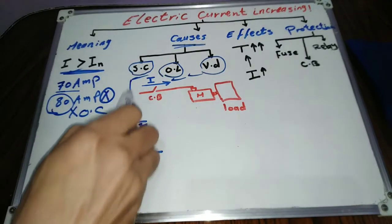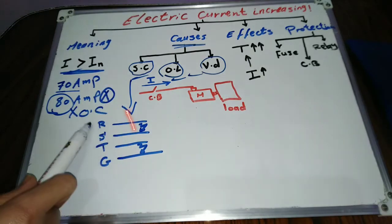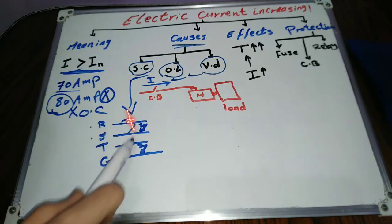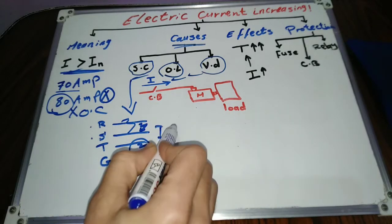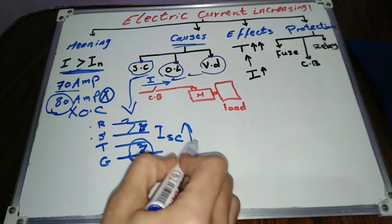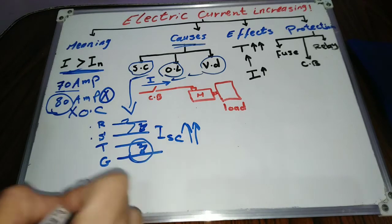Short circuit happens when a direct connection between two different phases or one phase in the ground. In this case, a very large amount of current passes through the circuit. The protection device should detect this excessive value and break the circuit.